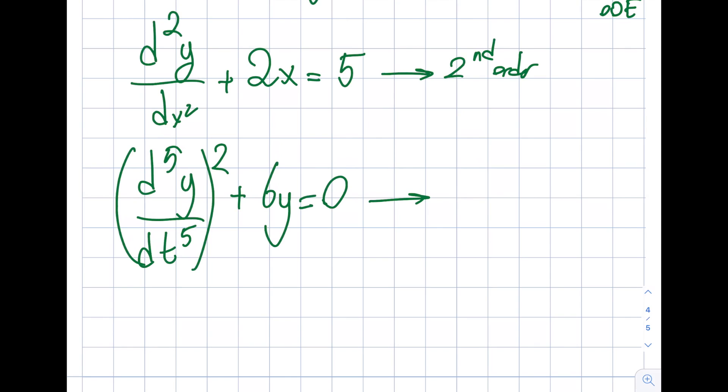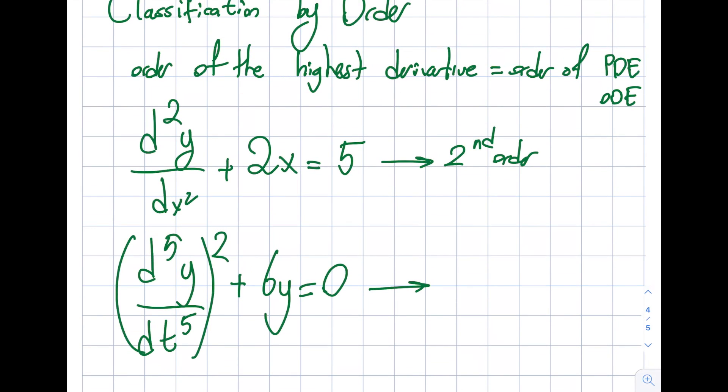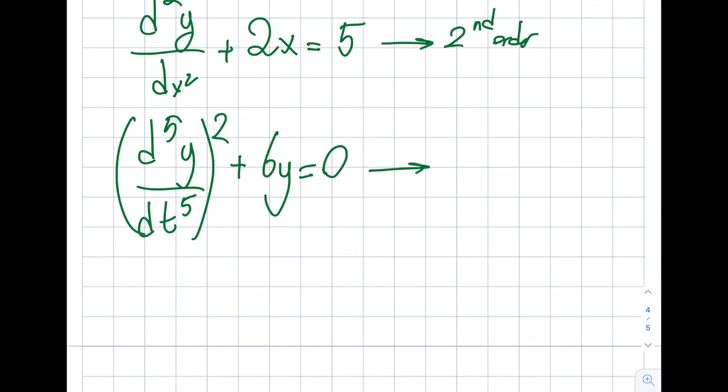Let me write it: (y⁽⁵⁾)² + 6y = 0. This is the 10th, right? The square of it would be the 10th order? That would be wrong. No, this is the 5th order. You need to be careful - order of the highest derivative.